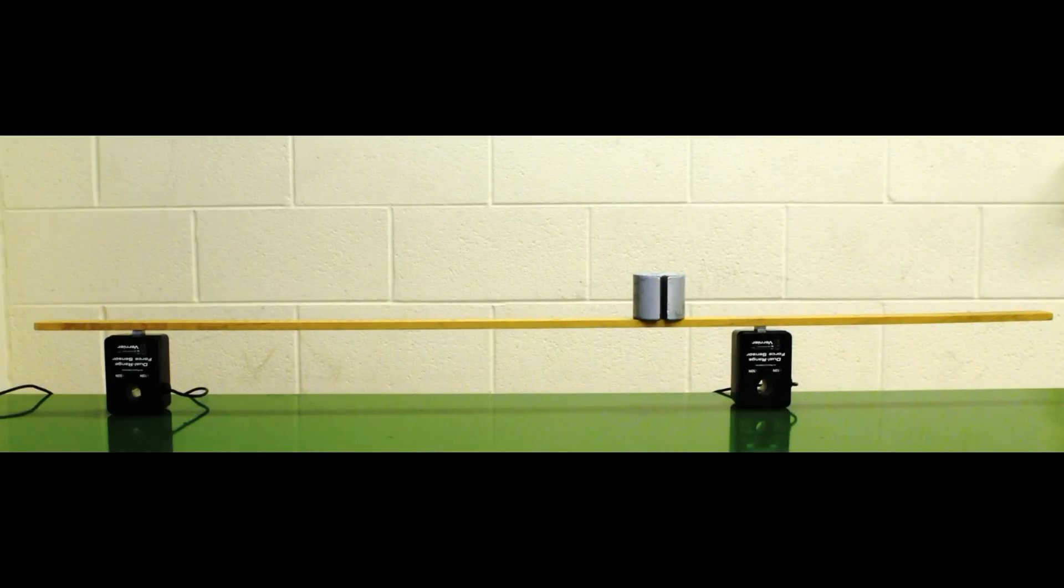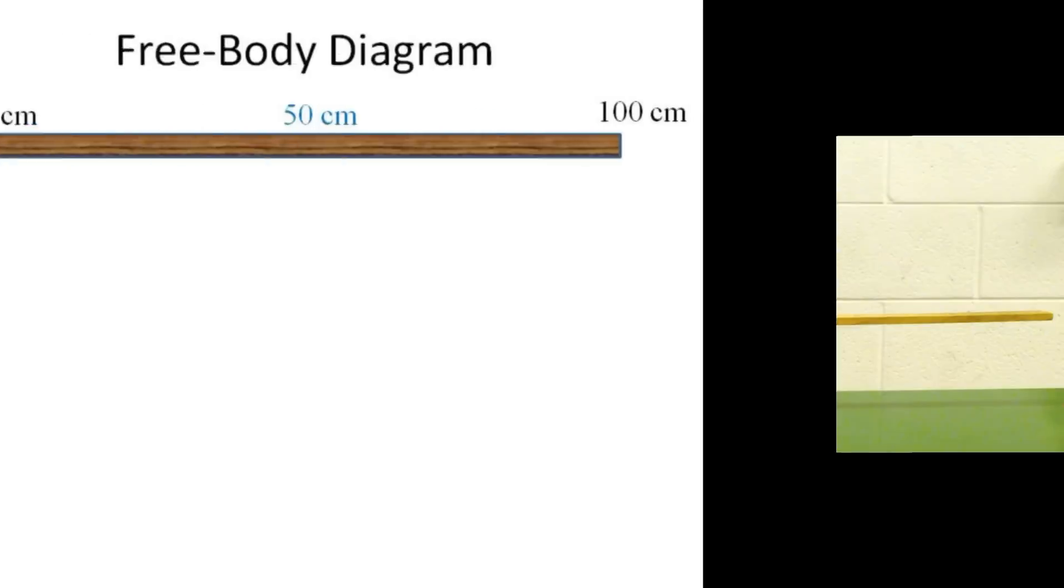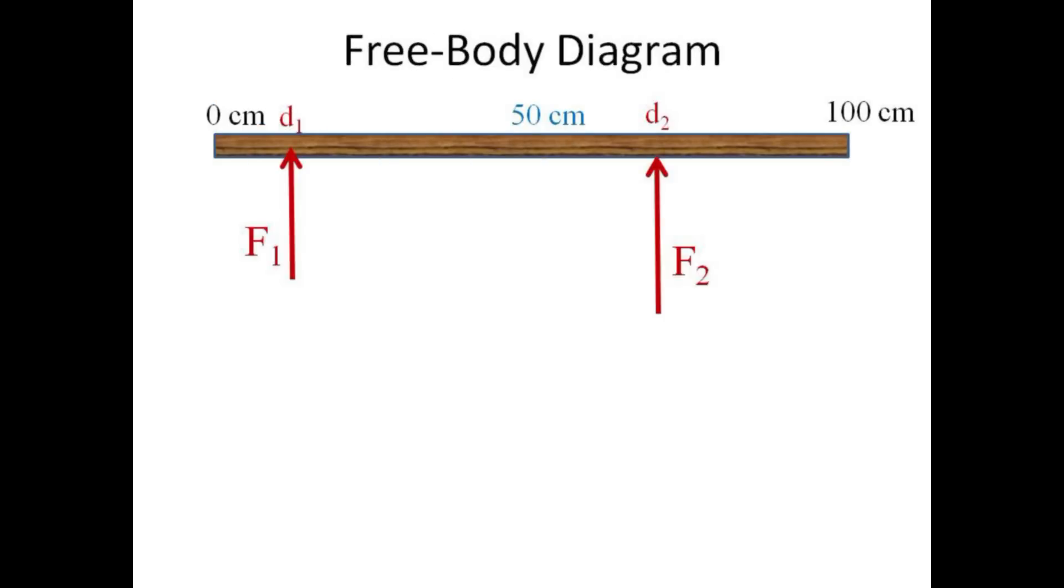In this lab, the bridge consists of a one meter stick supported by two force sensors and a load placed on the bridge. A free body diagram of the meter stick includes the upward forces of the two supports, the weight of the meter stick, and the weight of the load.